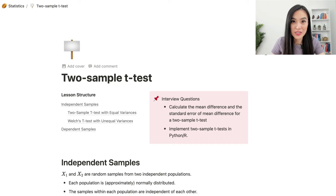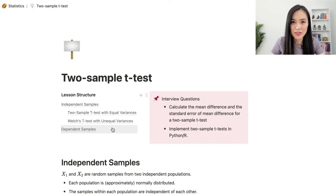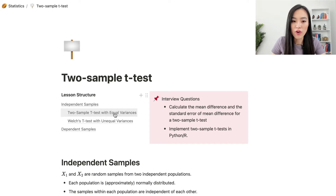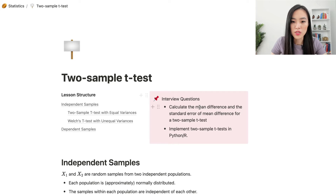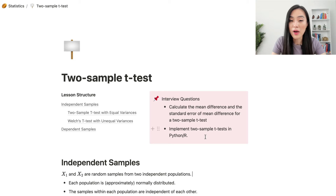In this lesson, let's talk about two-sample t-tests. We will cover how to use t-tests for independent samples and dependent samples. For independent samples there are two scenarios: one is that the two samples have equal variance and the other is that the two samples have different variances. We'll cover both scenarios, including how to calculate the test statistic and implement two-sample t-tests in Python or R.